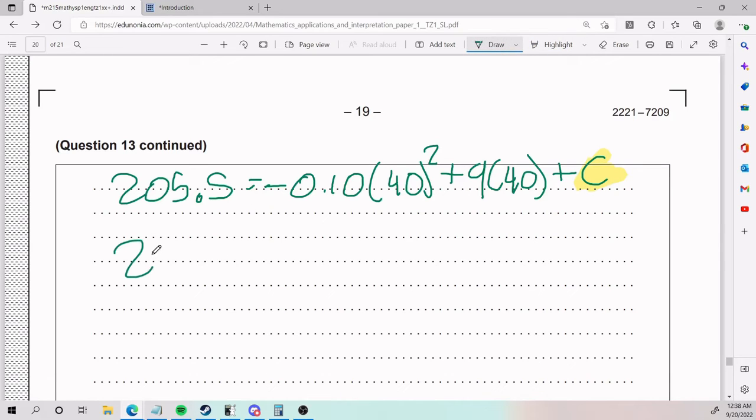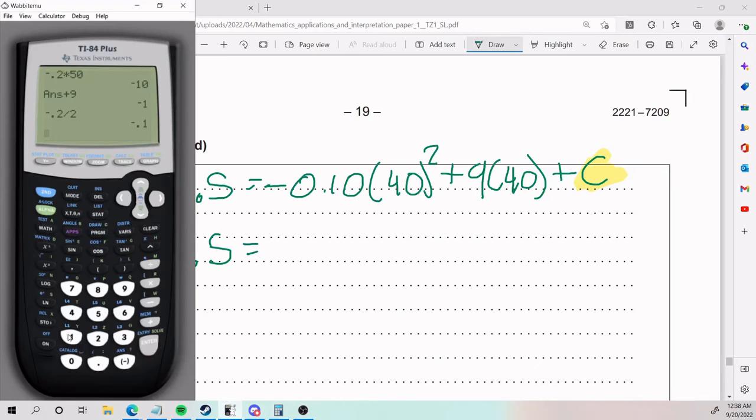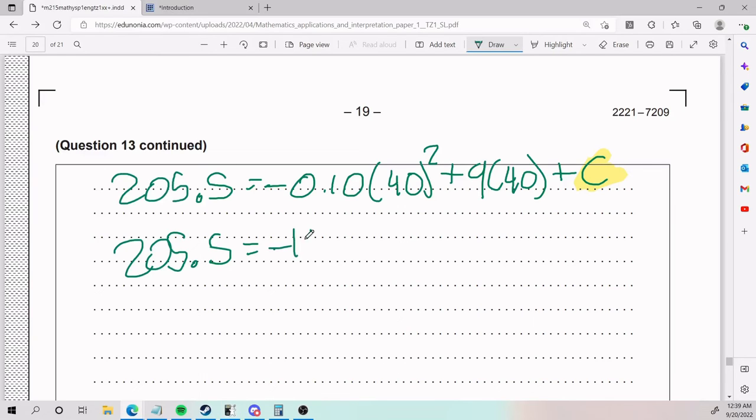So let's get C alone. Let's let our numbers play around for a little bit, let them dance. We have that negative 0.10 times 40 squared be negative 160.